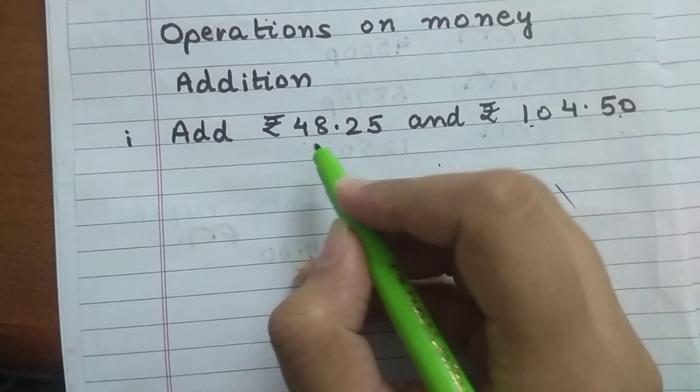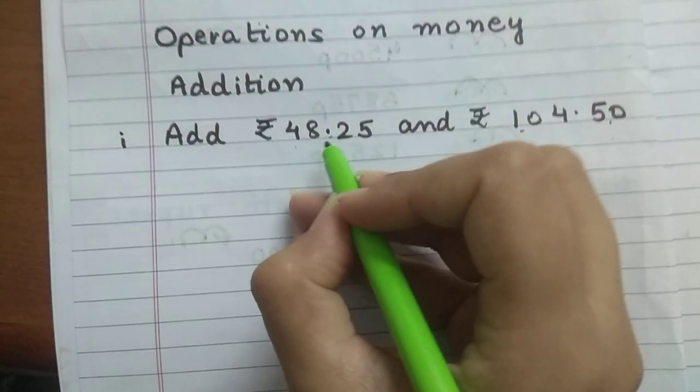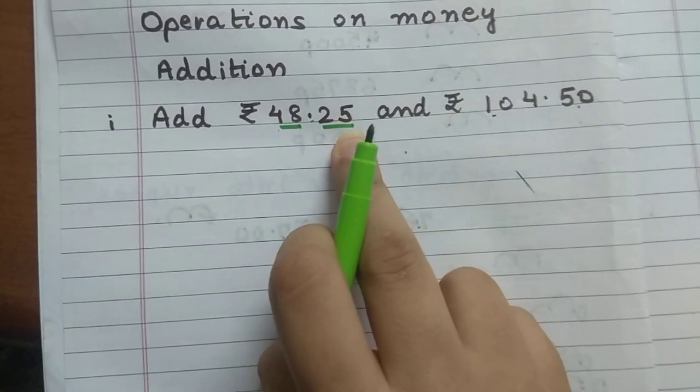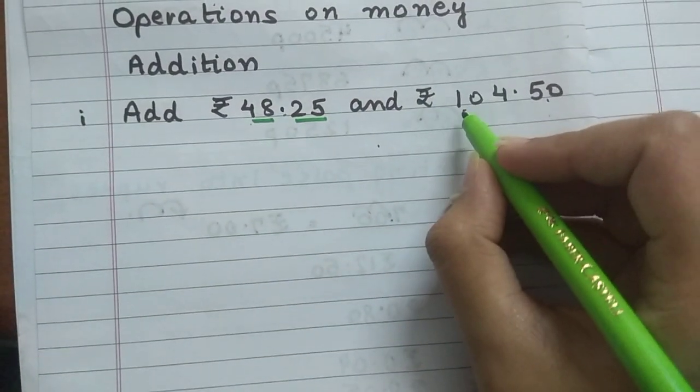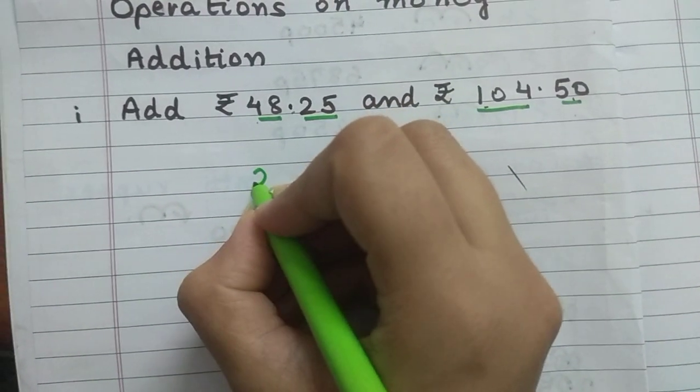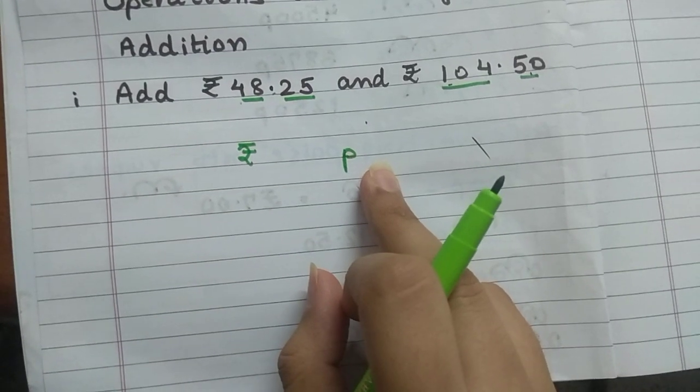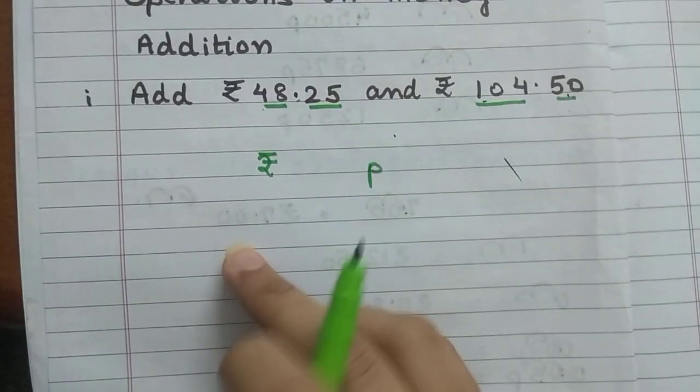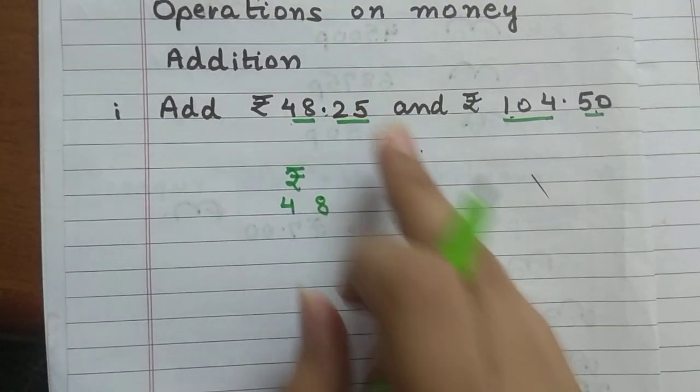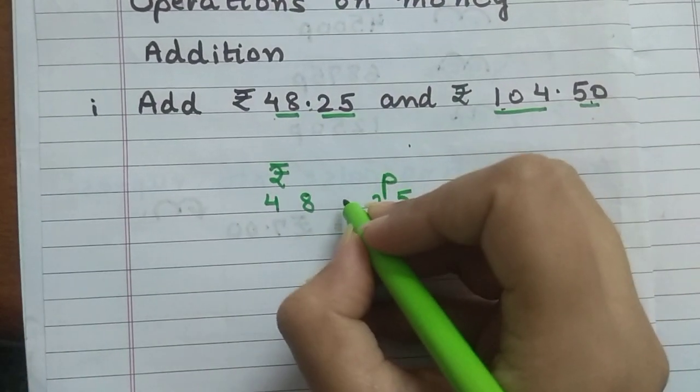I had told you last session that this decimal separates rupees and paisa. The number before the decimal is rupees and the number after the decimal is paisa. This part is rupees and this part is paisa. 48 rupees will go this side under rupees and 25 paisa will go under paisa. Rupees will go under rupees and this decimal will come in between.